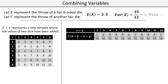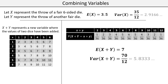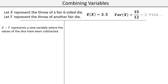The expectation of this combination is seven — you could also tell by symmetry. The variance of this combination is 70 over 12. You might have intuitively expected the expectation to be seven, and maybe even expected the variance to be seven.